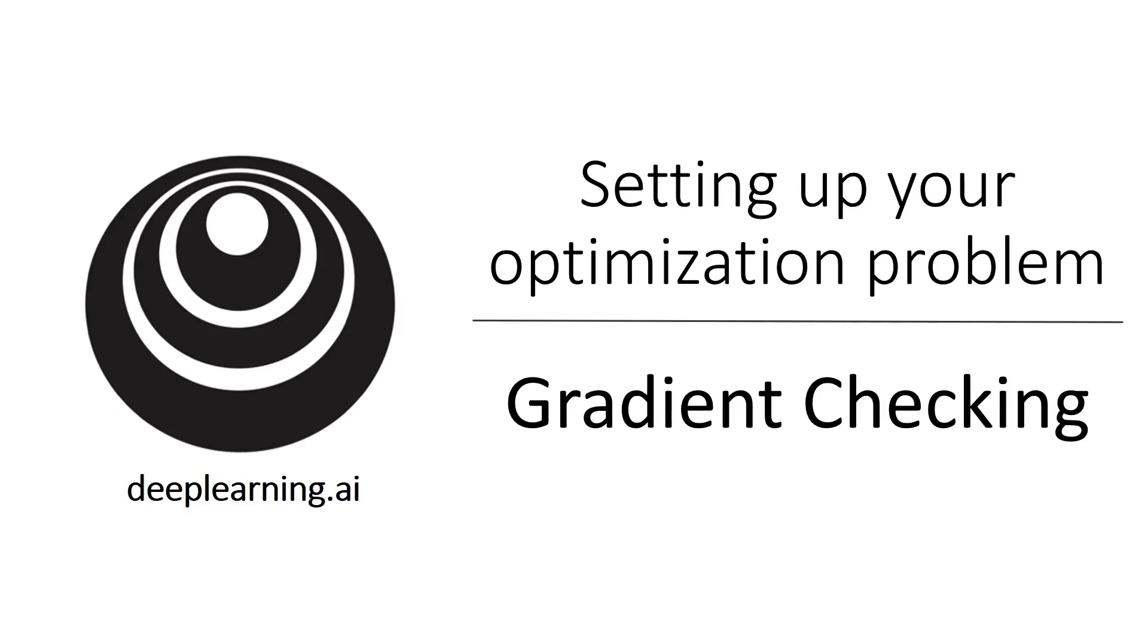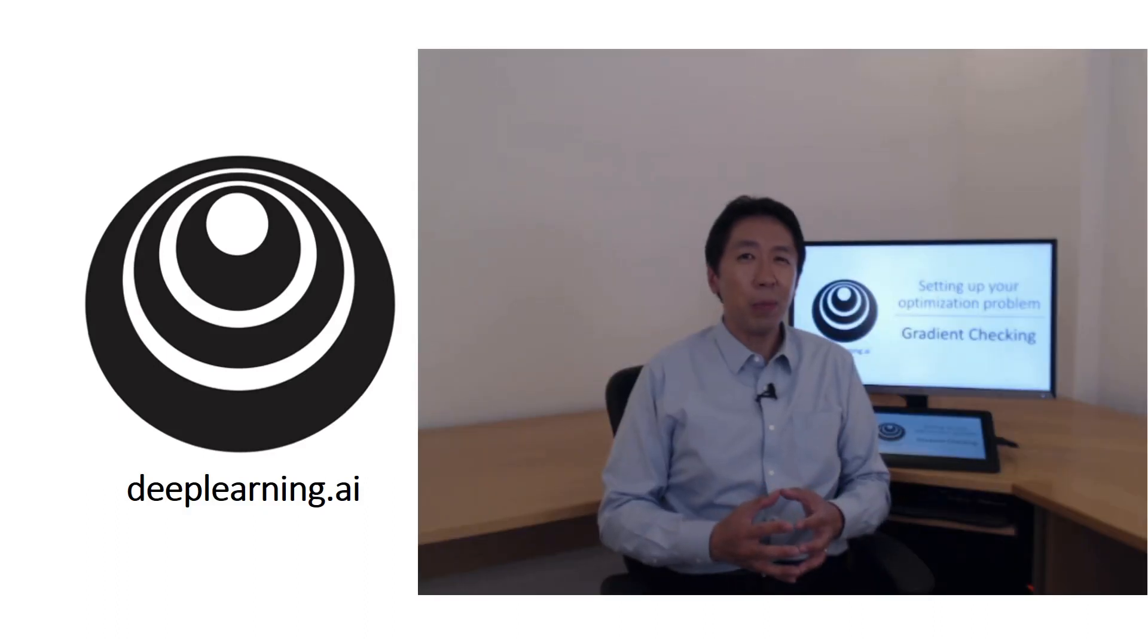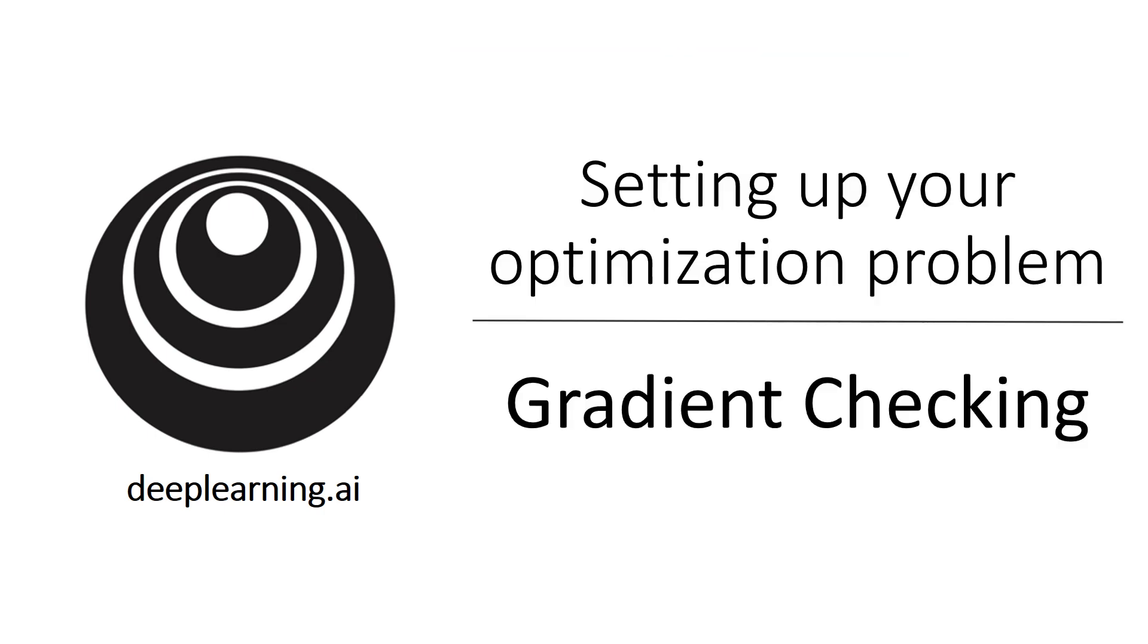Gradient checking is a technique that's helped me save tons of time and helped me find bugs in my implementations of back propagation many times. Let's see how you could use it too to debug or to verify that your implementation of backprop is correct.